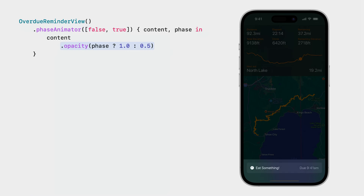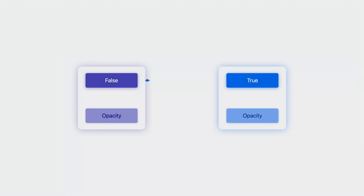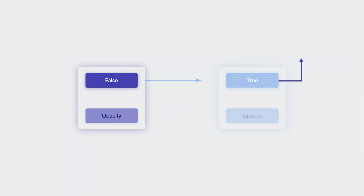Let's talk about what SwiftUI is doing on your behalf. We provided two phases to the Phase Animator modifier: false and true. When the view first appears, the first phase is active, causing the view to be 50% transparent. SwiftUI then immediately begins an animated transition to the next phase, where the view is fully opaque. Then, when that animation is finished, SwiftUI advances again. We only have two phases, so we loop around to the beginning, causing our animation to cycle between the two states.